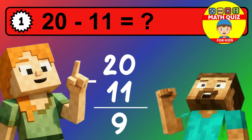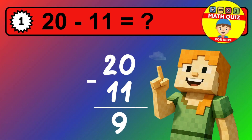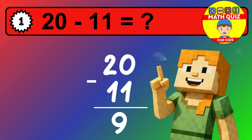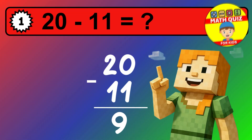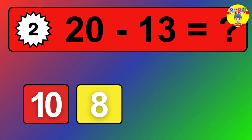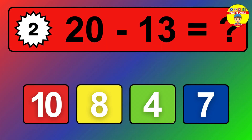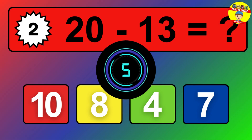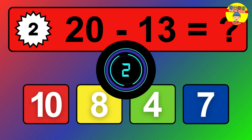We start with the units. 0 minus 1 is not possible, so we need to regroup. We take one 10 from the tens column. Now we have one tens, and the units become 10. Now we subtract. 10 minus 1 is 9. Then we go to the tens. 1 minus 1 is 0. The final answer is 9.